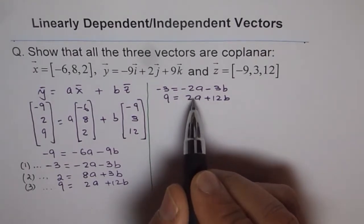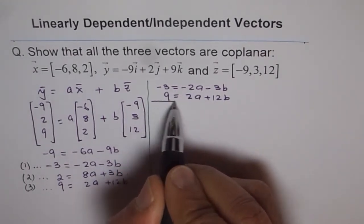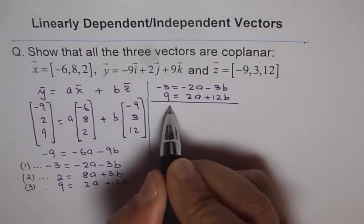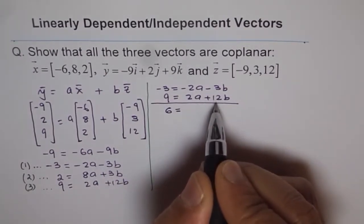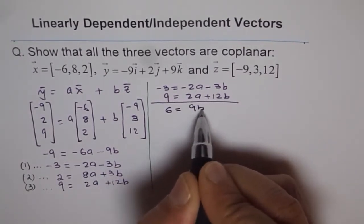Now, if I add these two, then what do I get? So adding these two, I get 6 equals to, this is 0, and that makes it 9b.